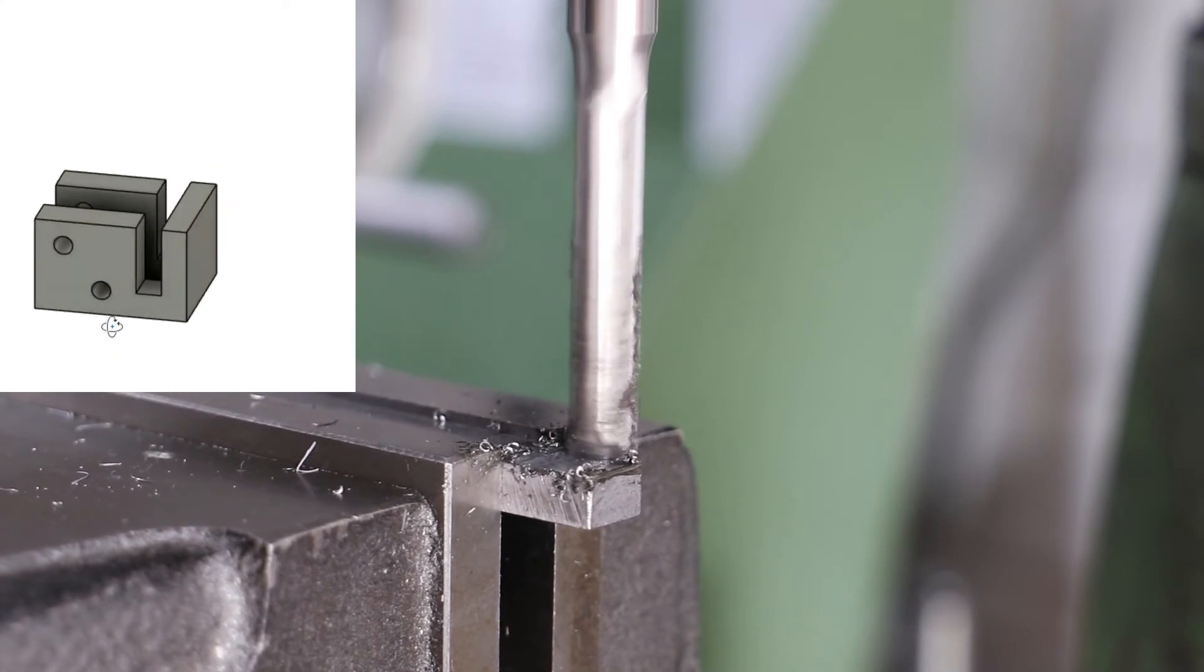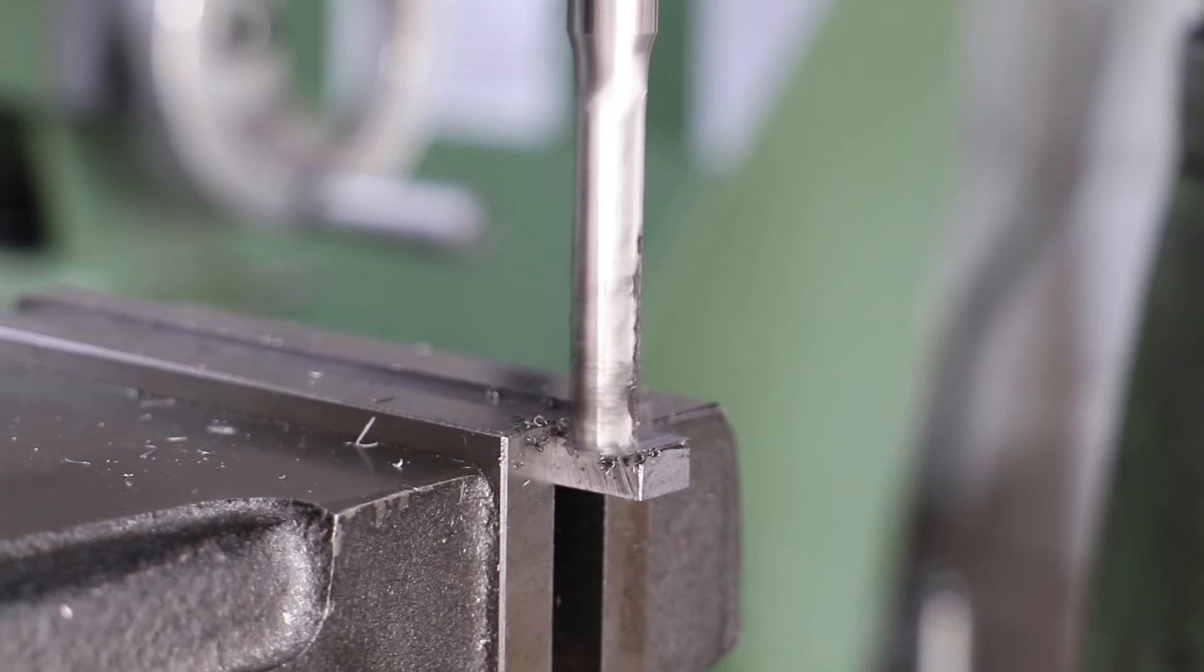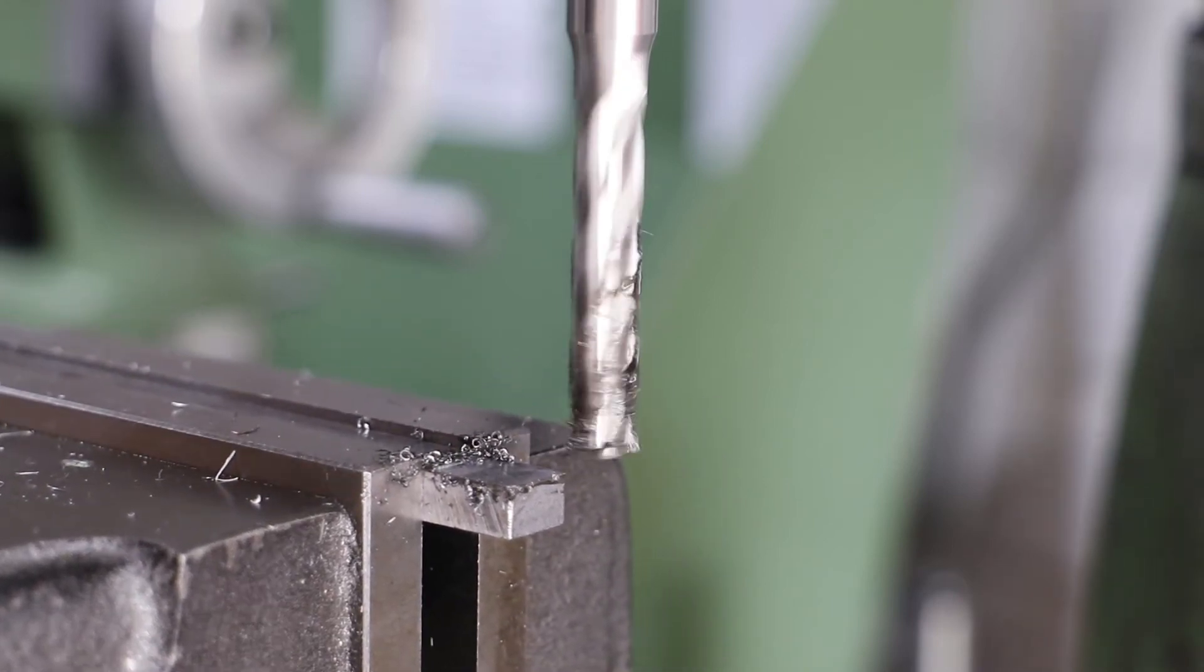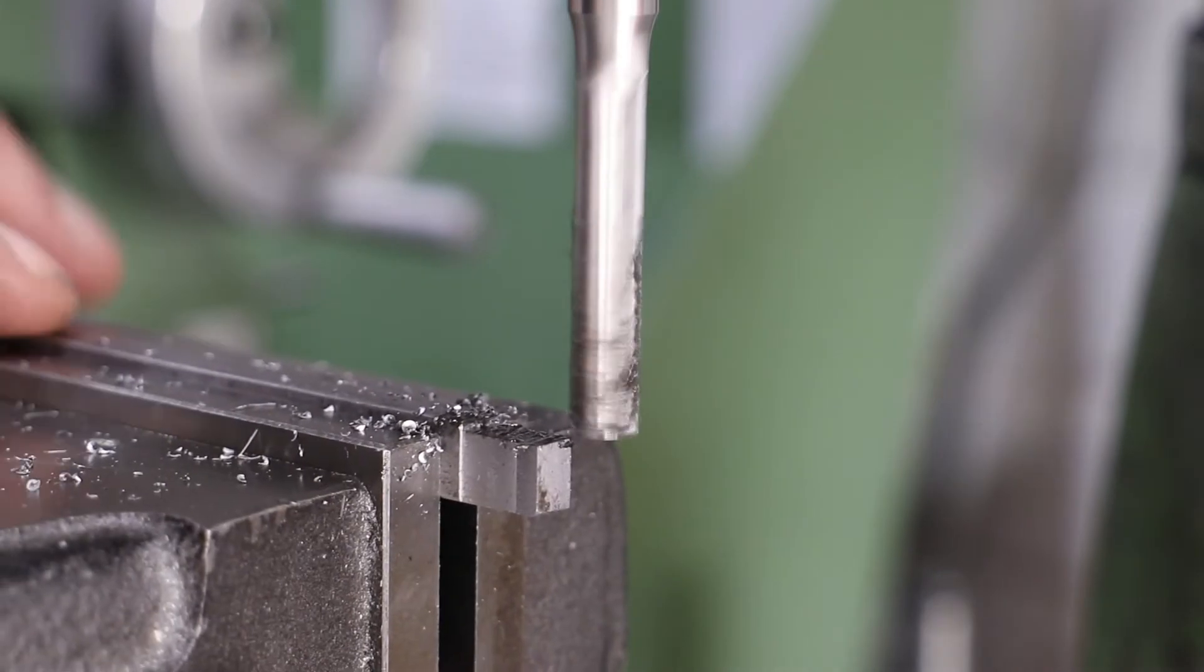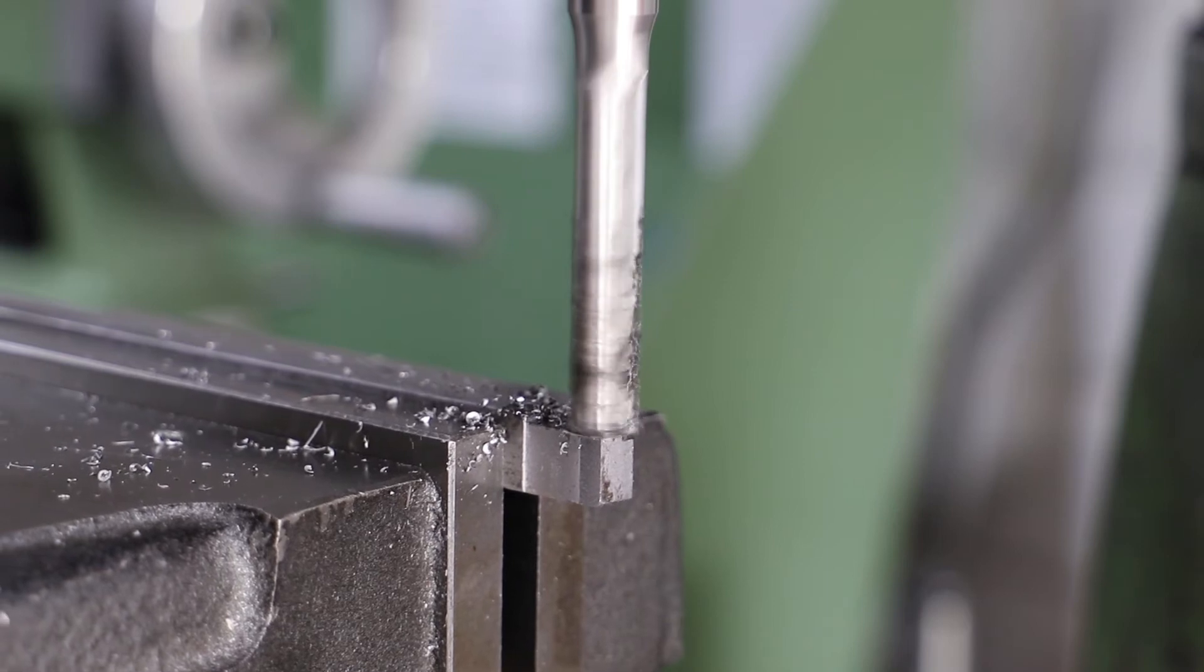Next job on the list is the latch block. This is a fairly complex little shape, little being the important word. I'm not used to working with stuff this small, so I'm actually finding it quite challenging. I start off with some bright mild steel bar and use an end mill to cut to the external dimensions, before cutting it off and finishing off the last face.